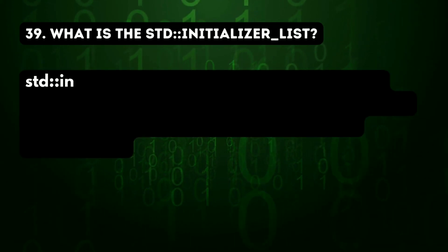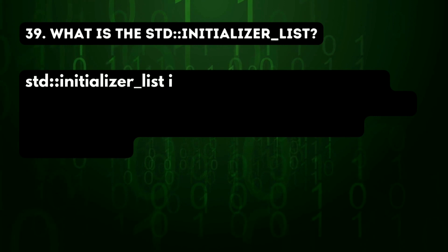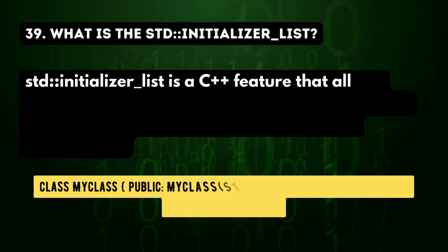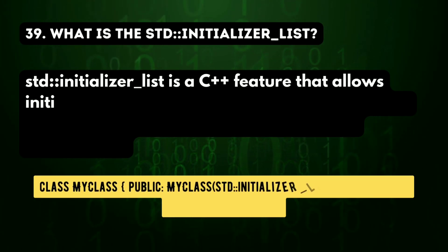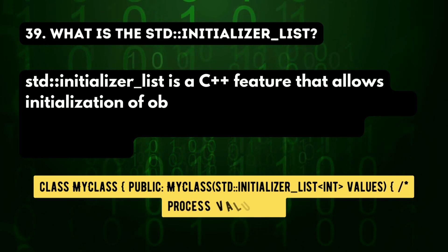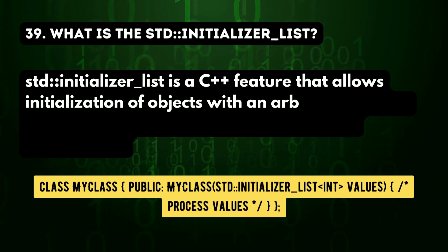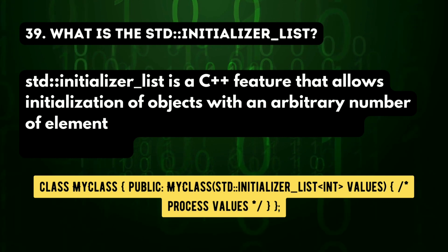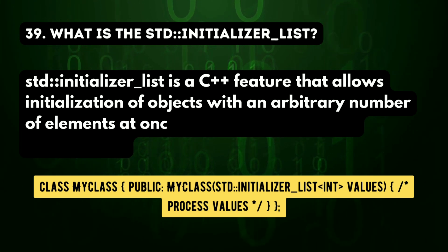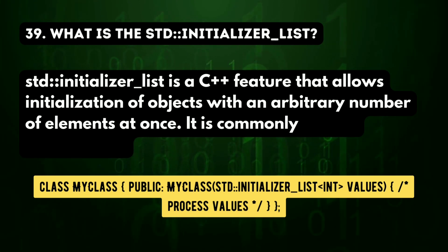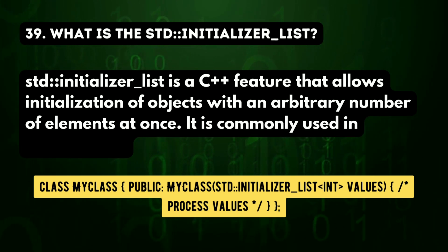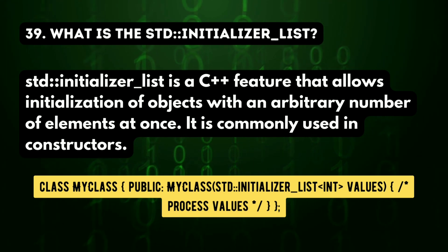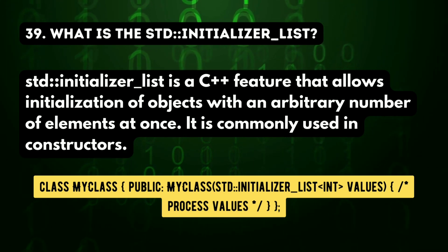39th question: what is std::initializer_list? The std::initializer_list is a C++ feature that allows initialization of objects with an arbitrary number of elements at once. It is commonly used in constructors.